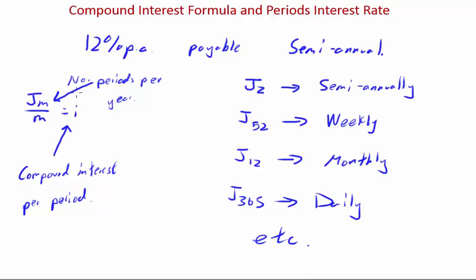Can we put this into our formula? jm on m equals i. This is your compound interest rate per period. m is your number of periods. Now, up to this point, our compound interest formula was this.